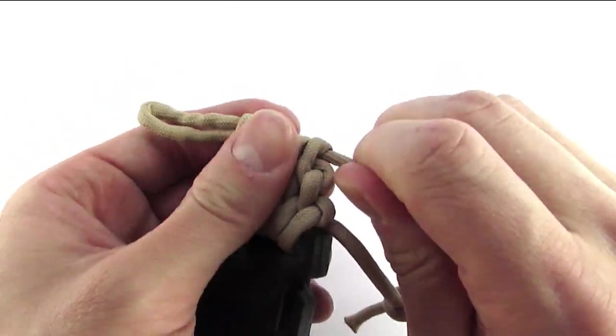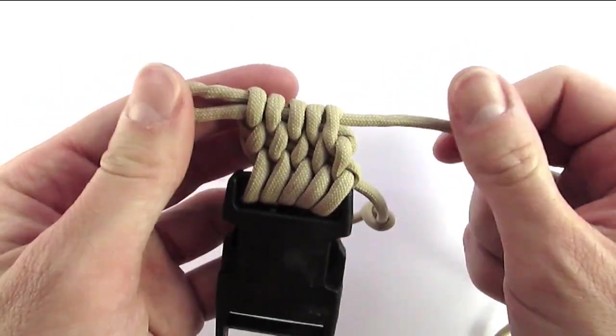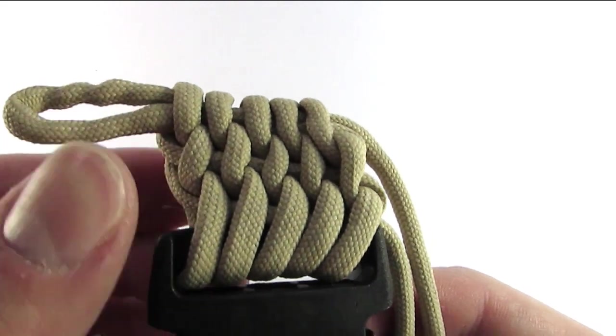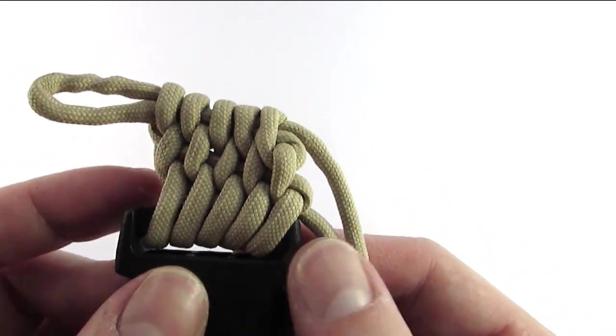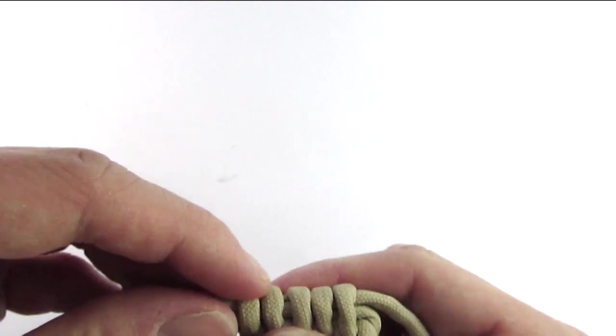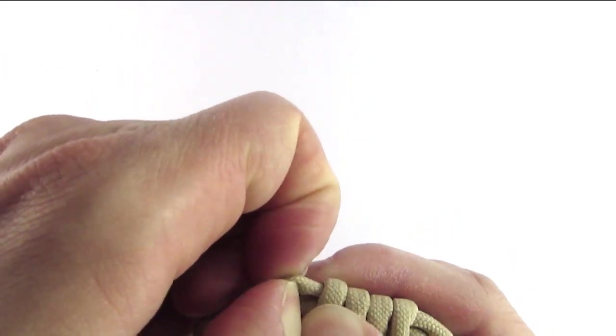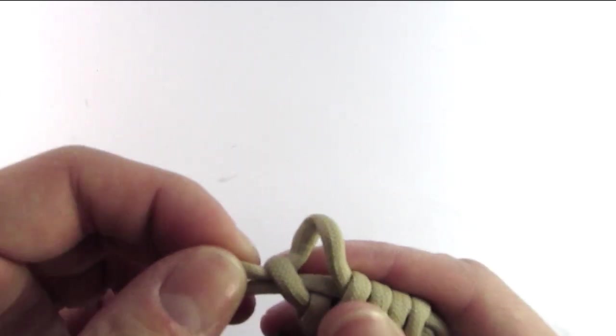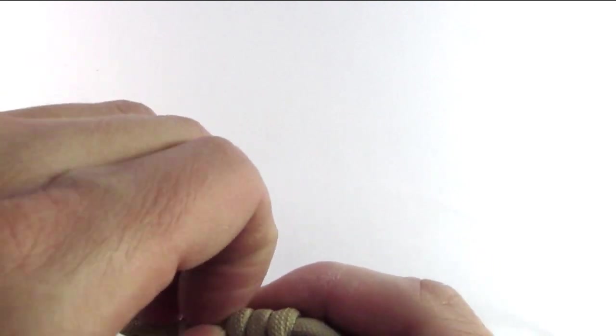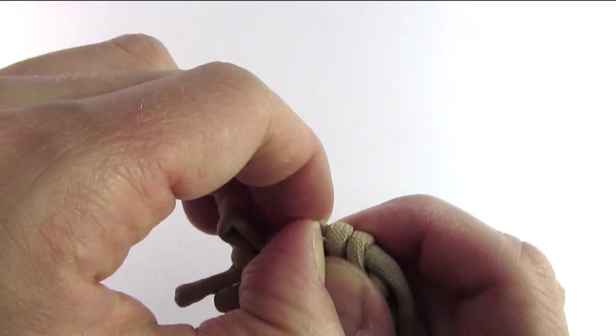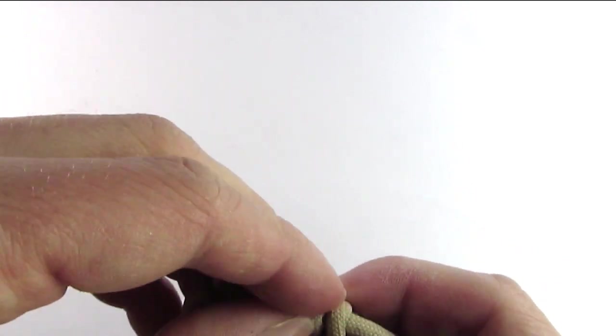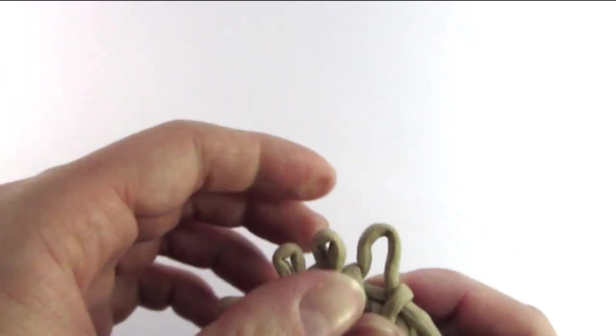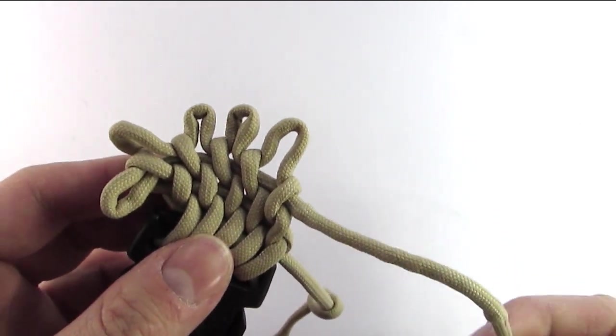and out to the right if you have too much on the left. So a new section complete, and we would continue this by again pulling out a new series of loops and then feeding the folded working end through them.